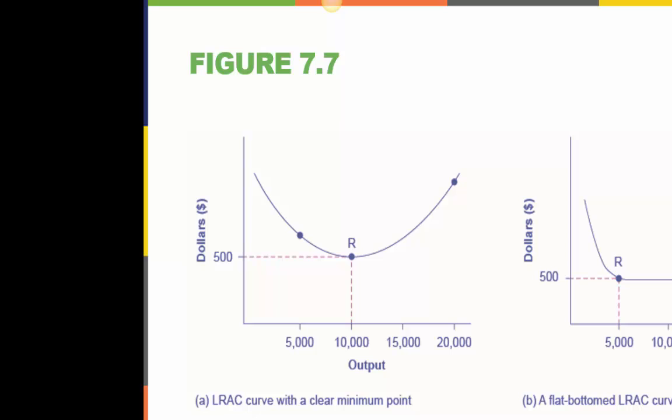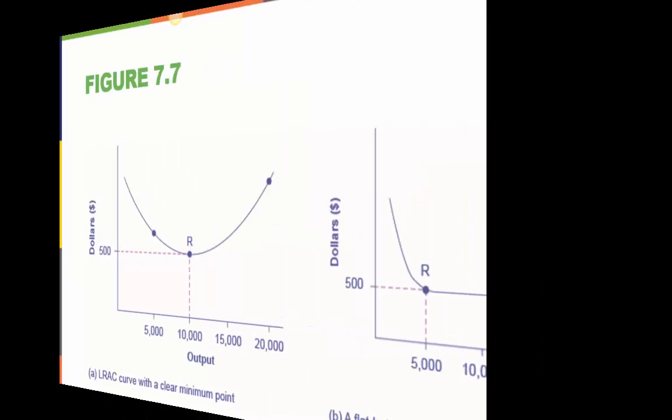Then any firm producing a different quantity will have higher costs. In this case, a firm producing at a quantity of 10,000 will produce at a lower average cost than a firm producing at 5,000 or 20,000 units.